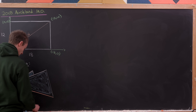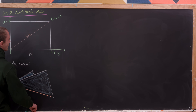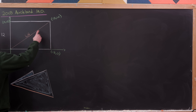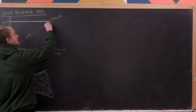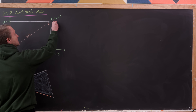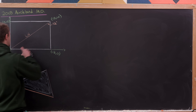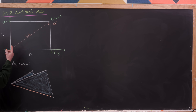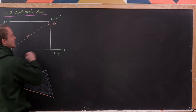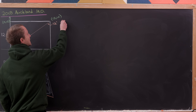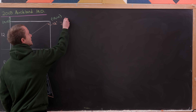We can pretty easily find the equation of the folding line. It goes through the origin and has a slope of 12 over 18, which is 2/3. So the equation of this folding line is y = (2/3)x.